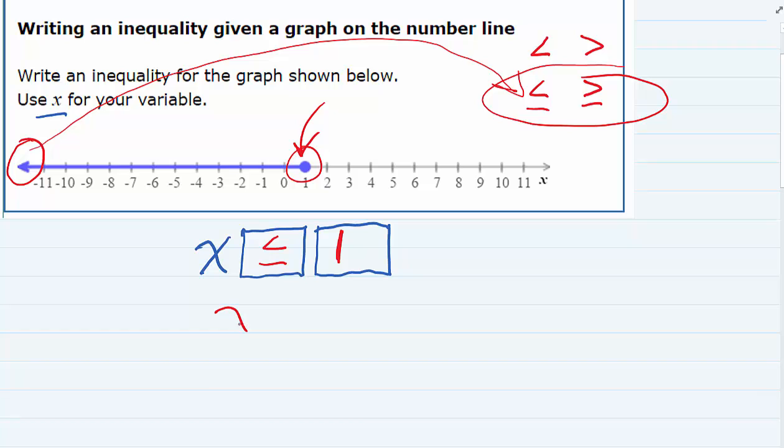So our inequality is x is less than or equal to 1, meaning that it is all those points to the left of 1, less than, and it also includes the point 1 because it's a solid dot.